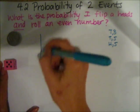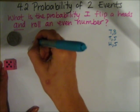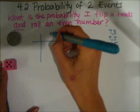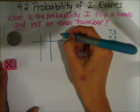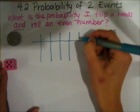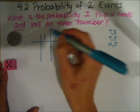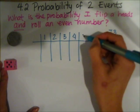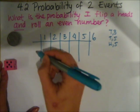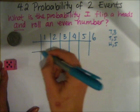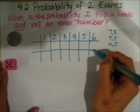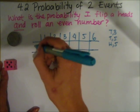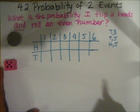What we do is create a table where along the top you have the outcomes of one of your events. I'm going to put the dice here — so on a dice I can get a one, two, three, four, five, or six. And along the side I'll list what can happen with the coin: I can either get heads or tails.